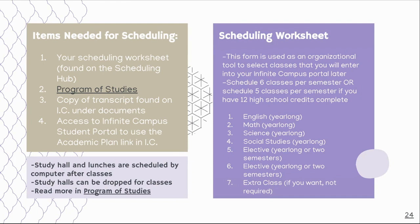Again, make sure you are reading the program of studies. When you're using the scheduling worksheet, this form is used as an organizational tool to select classes that you'll enter into your Infinite Campus Portal later. It's a great way to plan out what you're going to take so you can talk to your teachers and your family. It's really important — you must sign up for at least six classes per semester, or five classes per semester if you already have 12 high school credits. Typically that's juniors and seniors signing up for five classes.